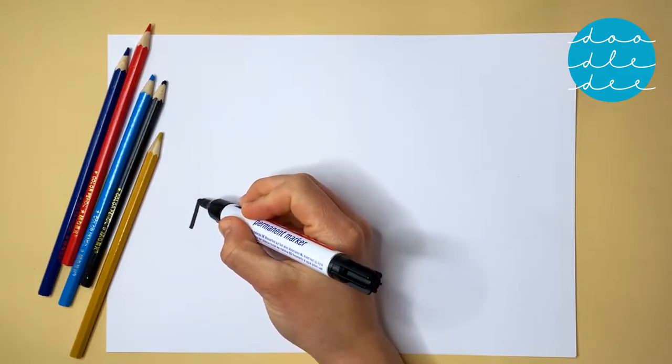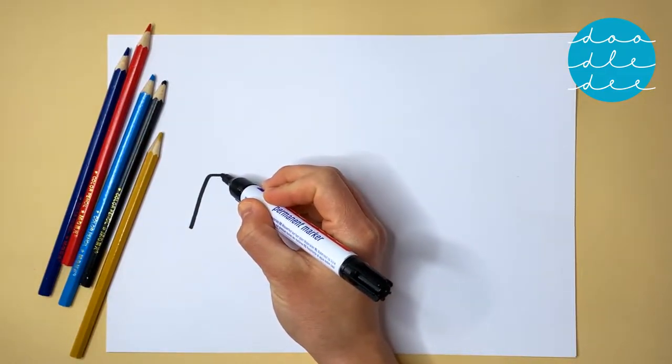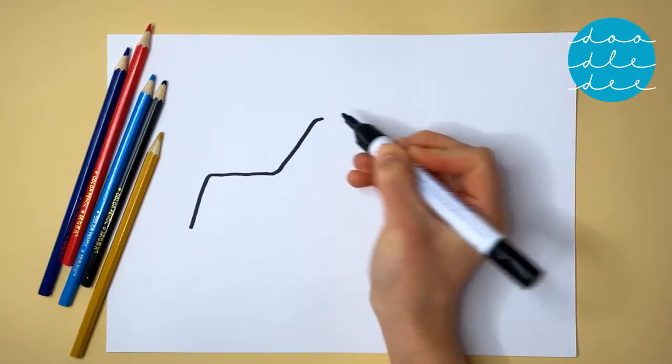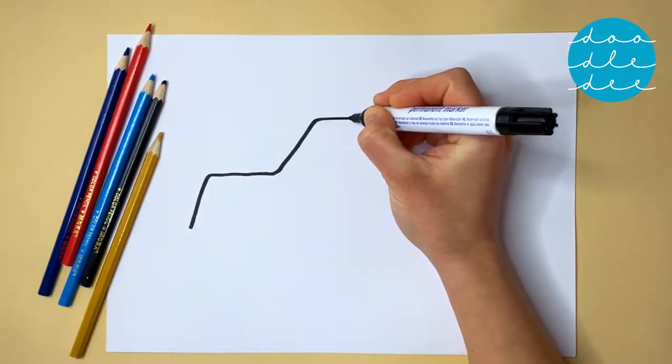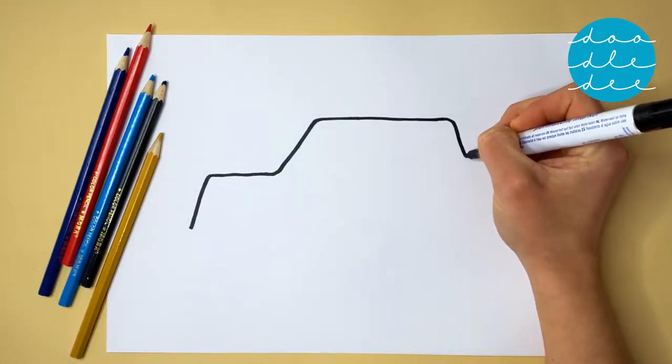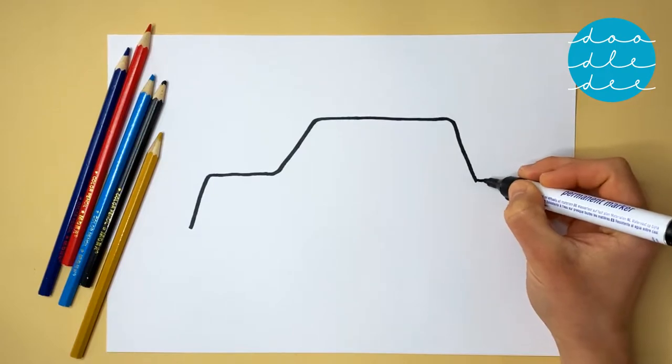Start by drawing a line up, then across, and up again. Another line across, then down, across, and down again.